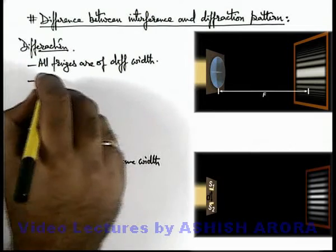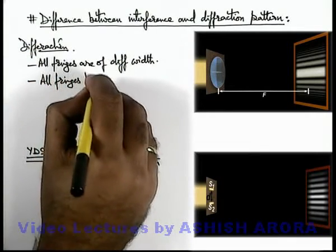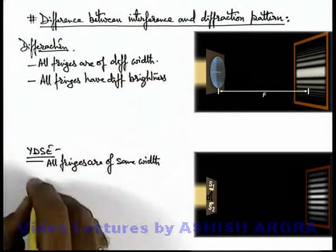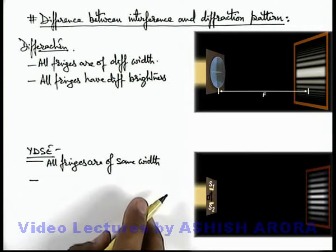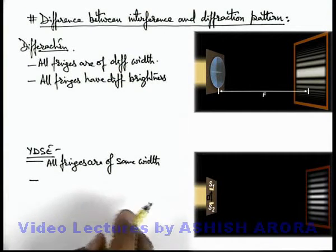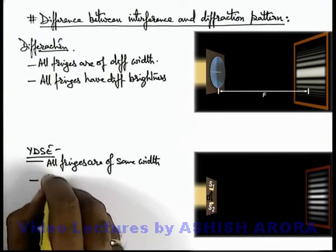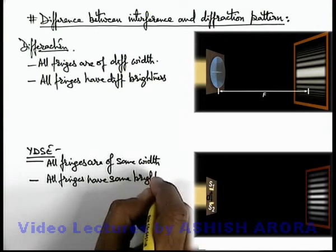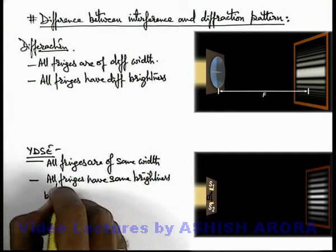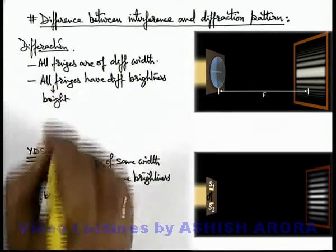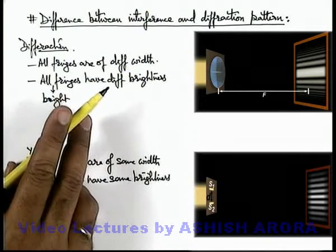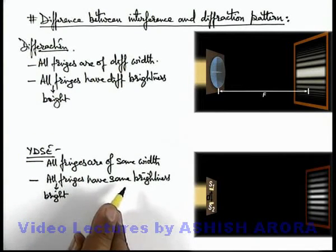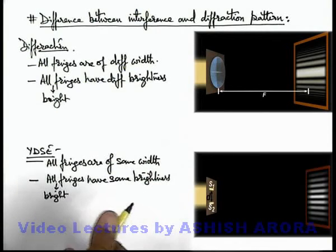Another difference is: in the single slit diffraction pattern, all fringes have different illumination or different brightness. Whereas in case of YDSE, as all the fringes are obtained by the superposition of two sources which are producing almost the same intensities on screen — since these are very close — all fringes have the same brightness. Here, 'all fringes' refers to bright fringes in both cases. In YDSE, all bright fringes have intensity 4I₀, if the individual slit is producing intensity I₀.